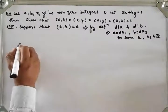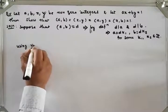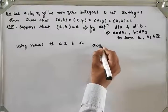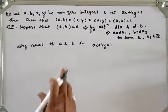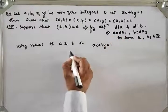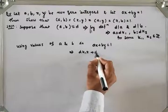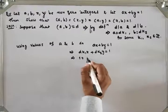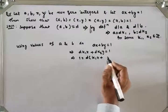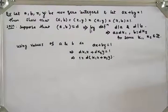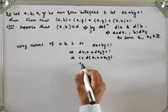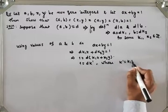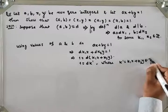Using the values of A and B in the equation AX plus BY equals 1 — A has value DK1 and B has value DK2 — we get DK1 times X plus DK2 times Y is equal to 1. So I will write it as 1 equals D into bracket K1X plus K2Y, which equals D times K-dash, where K-dash equals K1X plus K2Y, belonging to set of integers.